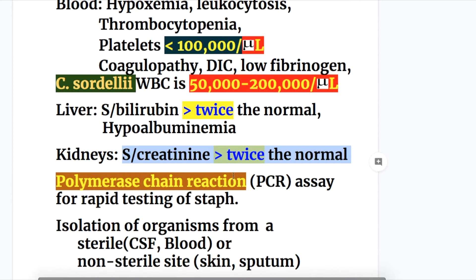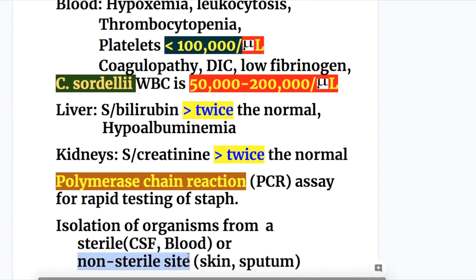Diagnosis also includes PCR assay for rapid testing of Staphylococcal species. Isolation of organisms can be from a sterile site — that is, CSF or blood — or from a non-sterile site such as skin and sputum.